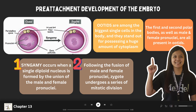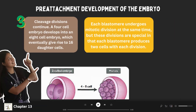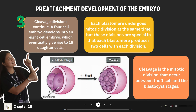Shortly thereafter, the zygote undergoes cleavage and gives rise to daughter cells called blastomeres. In this picture, the first cleavage division generates a two-celled embryo, also known as the blastomeres. Each blastomere in the two-celled embryo is about the same size and represents almost exactly one-half of the single-celled zygote.